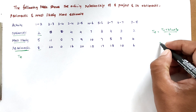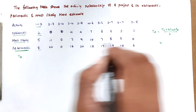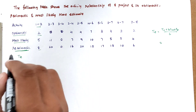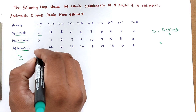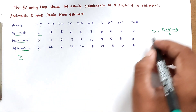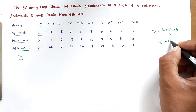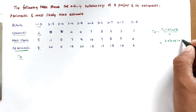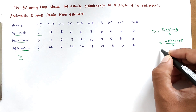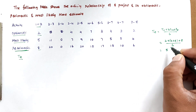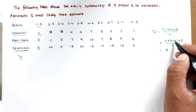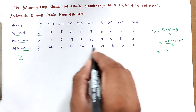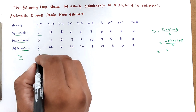For activity 1-2, we calculate the estimated time TE. In PERT, there are three time estimates which we convert into a single estimated time. Taking TO = 2, TM = 5, TP = 8: TE = (2 + 4×5 + 8) / 6 = (2 + 20 + 8) / 6 = 30 / 6 = 5. So the TE for activity 1-2 is 5.